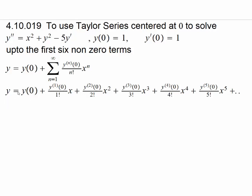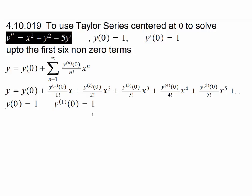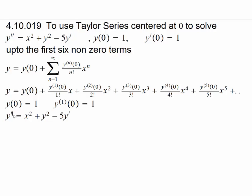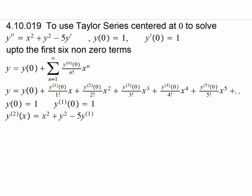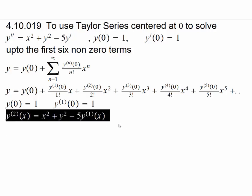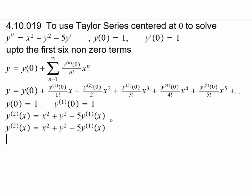We are already given that y(0) equals one, and also that the first derivative of y at zero equals one. To obtain the second derivative of y at zero, we bring down the given differential equation and substitute x equals zero.